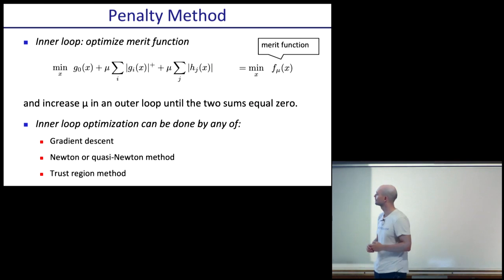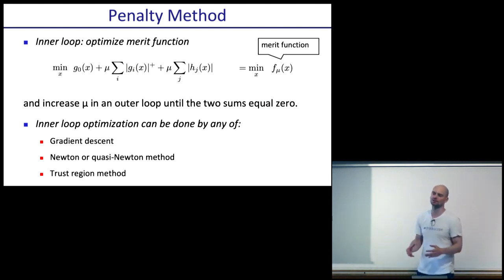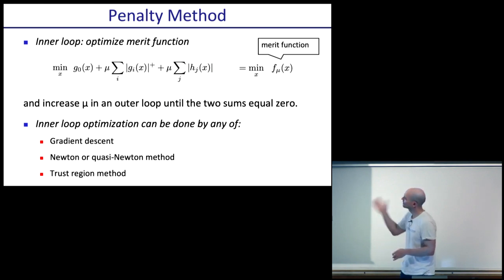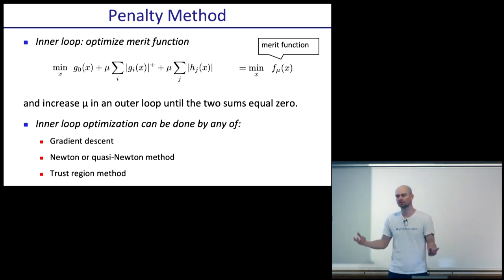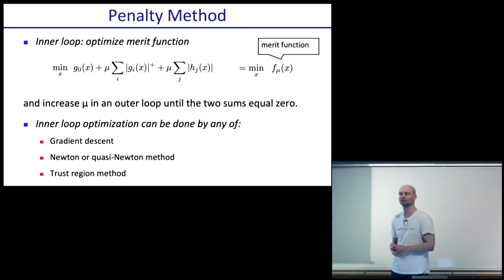Once you have larger problems, the trust region inner loop might become too expensive, and you might resort to gradient descent. But gradient descent is typically poorly conditioned because different variables contribute differently to the objective. In practice it would probably be a quasi-Newton method — think of gradient descent as something you'd probably never really run; you'd prefer quasi-Newton because it's about the same cost but scales better.